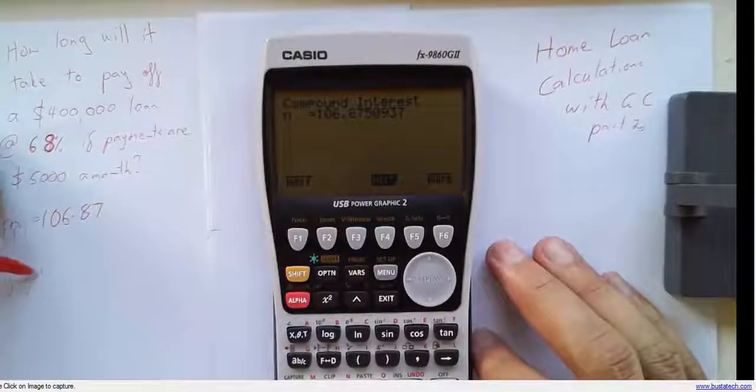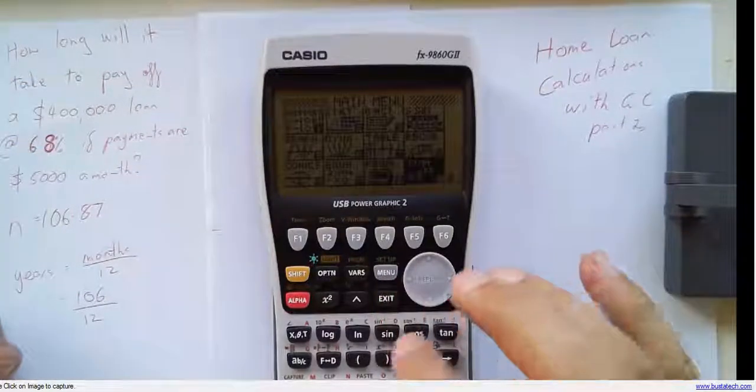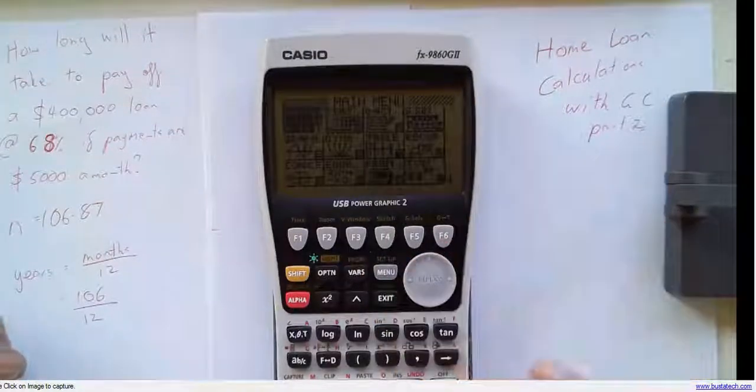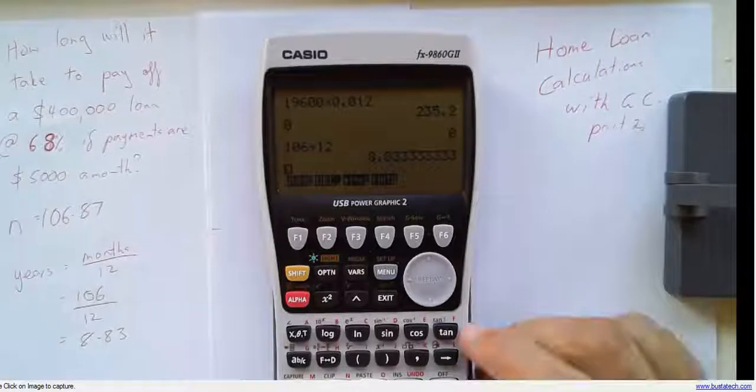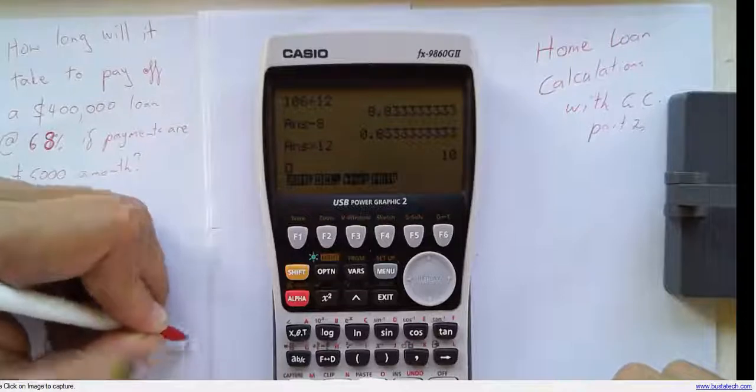Now, we need to convert that to years. Now, if it's 106.87 months, you divide that by 12 and you get 8 point something. All right, let's do 106 divided by 12. It's 8.83. You can figure out that that's 8 years and 10 months.